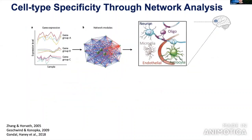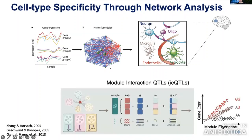This cryptic exon insertion leads to nonsense-mediated decay through inclusion of a premature stop codon. It happens in a small percentage of transcripts but leads to a down-regulation effect through a previously unannotated splicing mechanism. We can also add cell-type specificity through network analysis, using unsupervised clustering to computationally deconvolve gene expression effects within specific cell type populations.